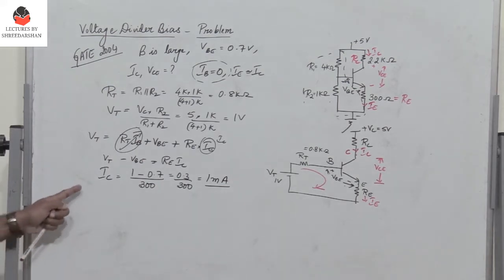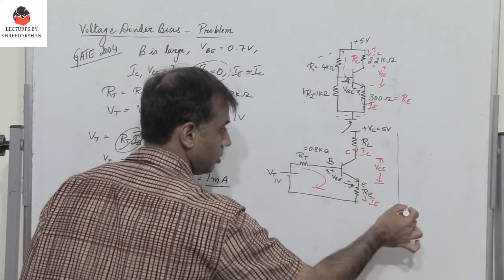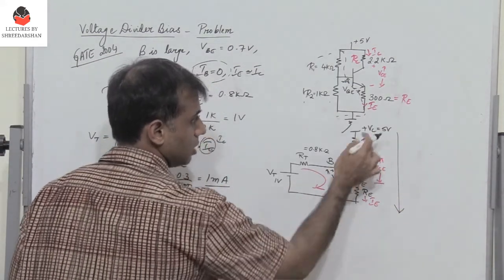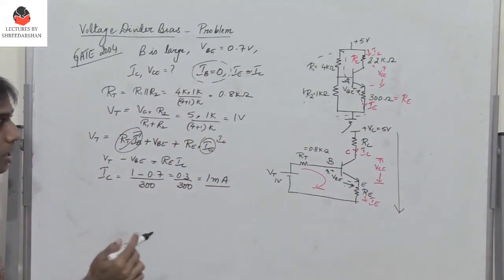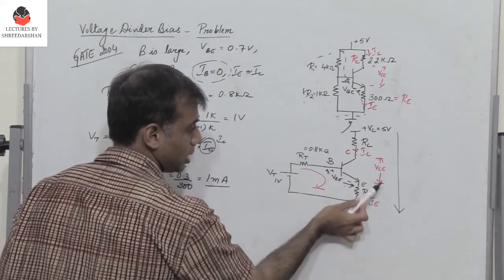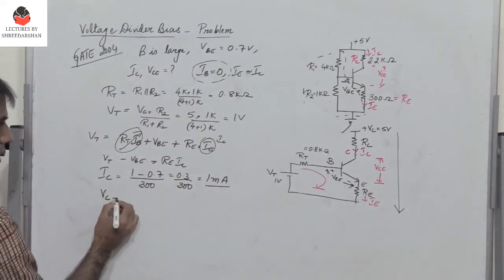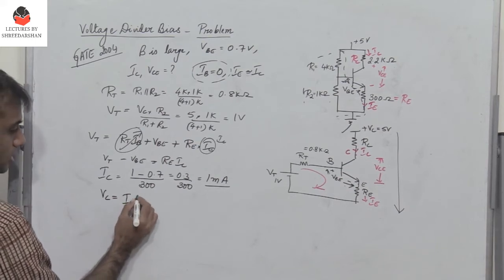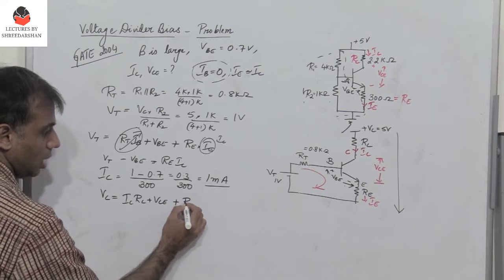Once you find the value of Ic, we have to calculate the value of Vce. For Vce, I write KVL along this path. So Vc equals drop across Rc plus Vce plus drop across Re. Here I write Ic because Ic equals Ie. So Vc equals Ic Rc plus Vce plus Ic Re.